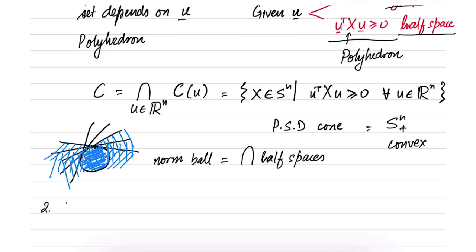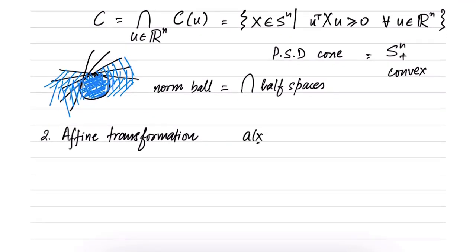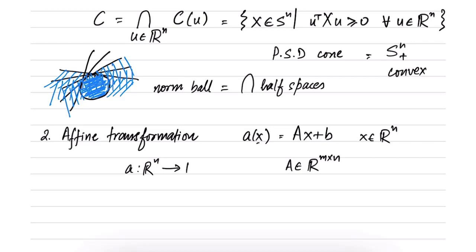Another type of operation is the affine transformation. An affine transformation is given by A(x) = Ax + b, where x is a vector in R^n and A is in R^(m x n). The affine transformation maps from R^n to R^m: it takes input x in R^n and outputs Ax + b, a vector in R^m, where b is in R^m.